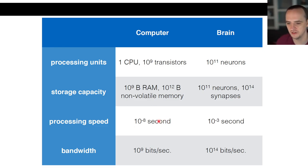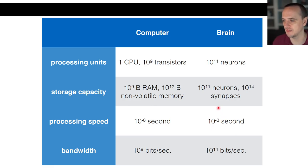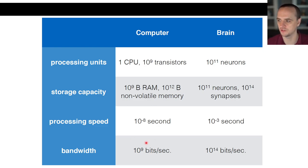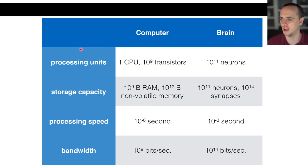However, the processing speed of a computer — how quickly it cycles — is much faster than in the brain. We're talking tens of millions to billions of cycles per second for a computer, versus the brain doing maybe a couple of thousand per second. Computers are still pretty serialized with bandwidth in the billions of bits per second, whereas in the brain everything is massively parallelized with trillions of bits per second being passed around. It's just showing there are differences between modern computers and how our actual brain works.